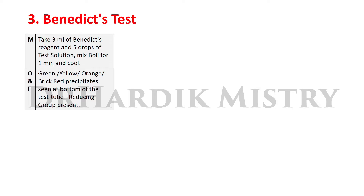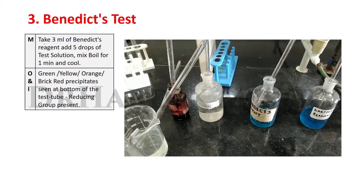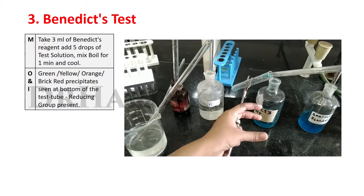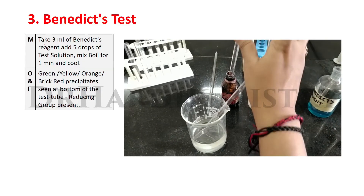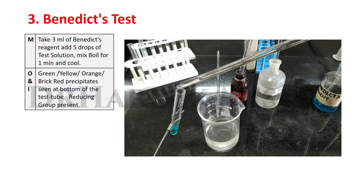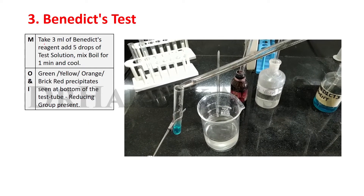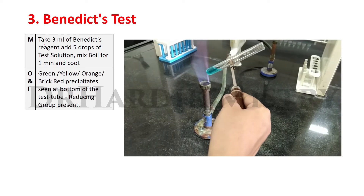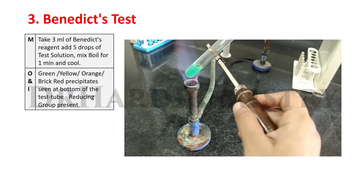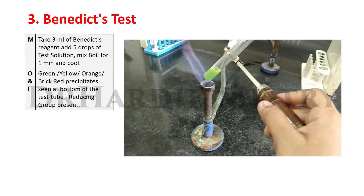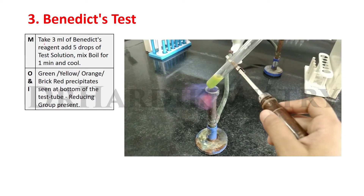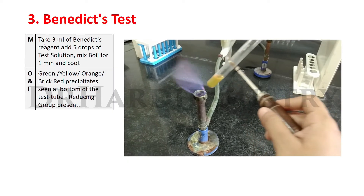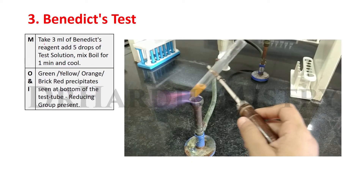Method, observation, and inference of Benedict test. Method: Take 3 ml of Benedict's reagent. Add 5 drops of test solution. Mix, boil for 1 minute, and cool. Observation: Green, yellow, orange, or brick-red precipitate seen at the bottom of the test tube. Inference: Reducing group is present in the carbohydrate. That is Benedict test.